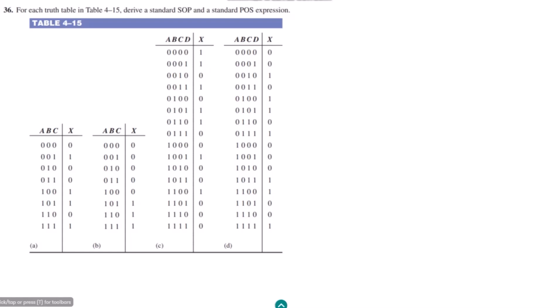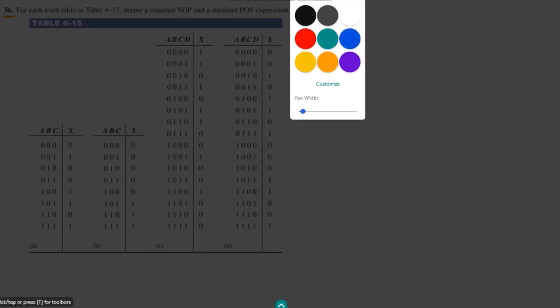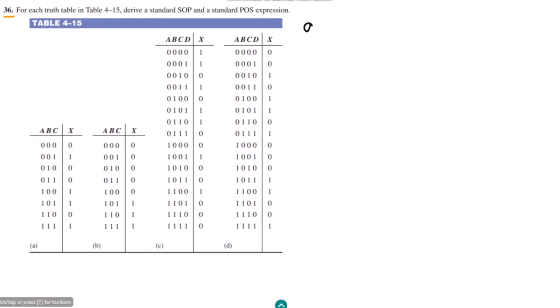Welcome back guys, this is question 36. Here we have to find the sum of product and product of sum expressions for all the terms which are in the form of these two tables. Let me first find the product of sum and sum of product terms for table A of my question, so let me write here part A.